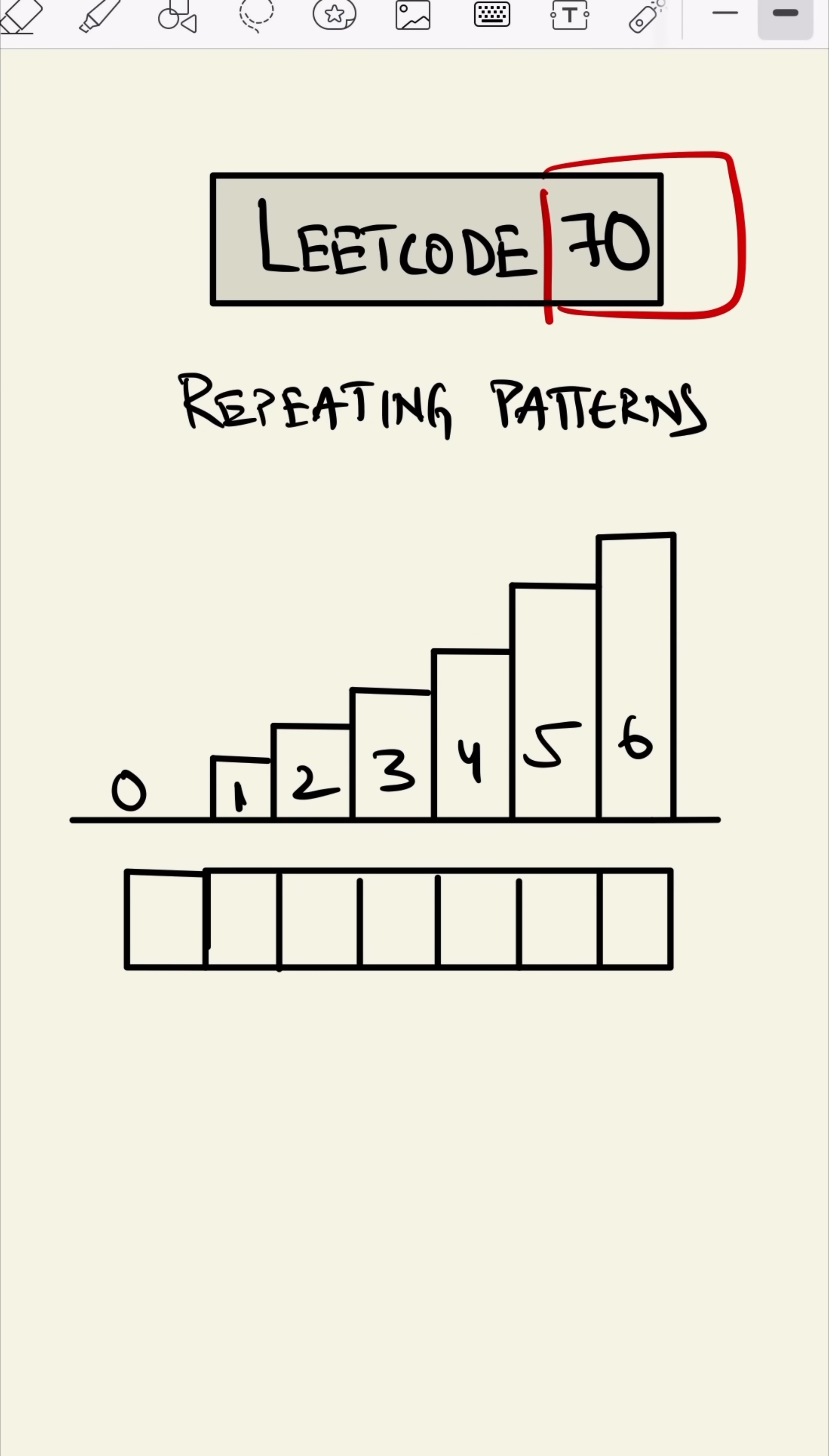To avoid repeating patterns, we will start from the back. Let's see how we can do that. By default, the last value will be one. Now, from step five, we can go to step six in only one way. So one here.